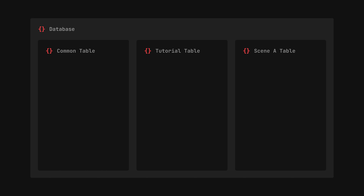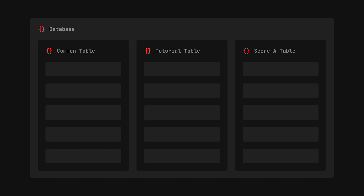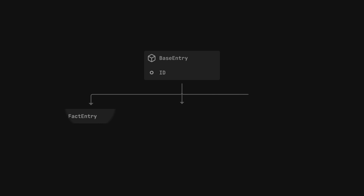So how does it work? At the heart of Typewriter lies its database, containing a collection of tables, each represented by a scriptable object, each containing a set of entries. In its simplest form, an entry is just an object with an ID. But there are three different types of entries, each having a specific purpose.